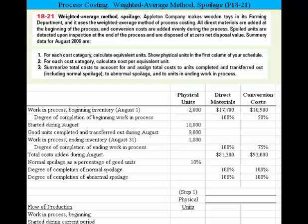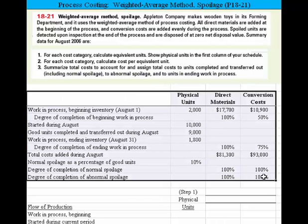Let's take a look at this process costing problem dealing with weighted average that also considers spoilage. It's problem 18-21. Appleton Company makes wooden toys in its forming department and uses the weighted average method of process costing. All direct materials are added at the beginning of the process and conversion costs are added evenly during the process. Spoiled units are detected upon inspection at the end of the process and disposed of at zero net disposal value. We have some summary data from August and three requirements.